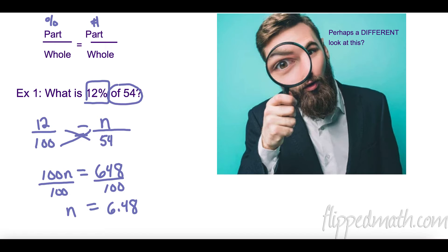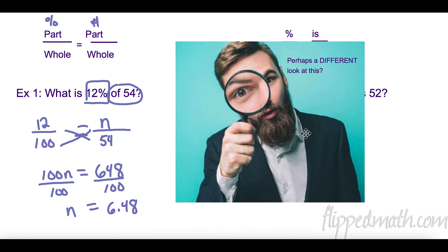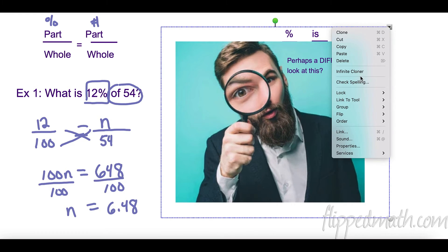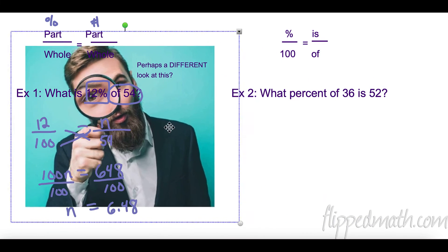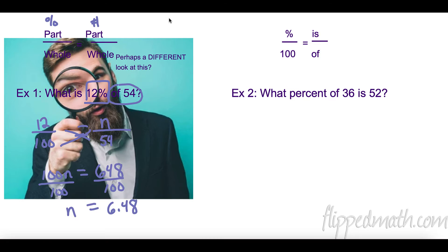Now let's take a different look at the same thing. Every time we had our percent over 100 for part and whole. What's going on is the part goes on top - that's the 'is' - and the whole is the 'of.' So we can use this proportion every single time to solve these: percent over 100 equals 'is' over 'of.'